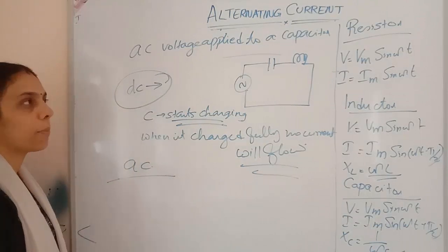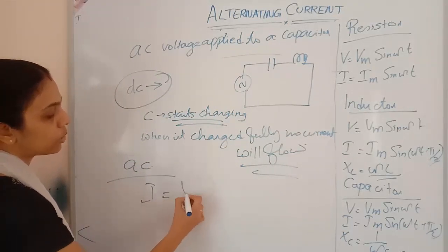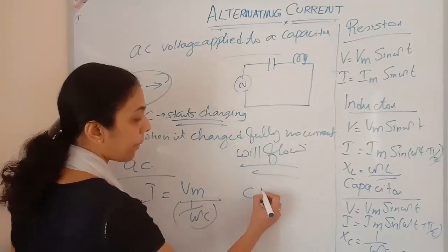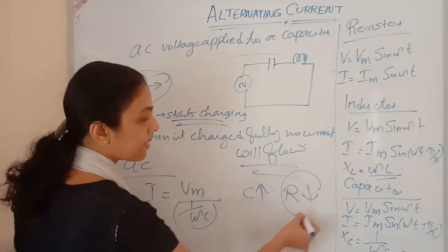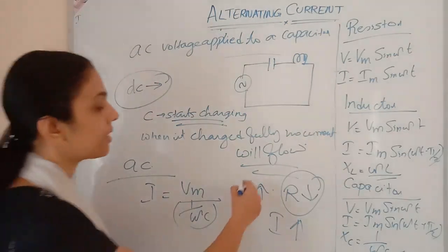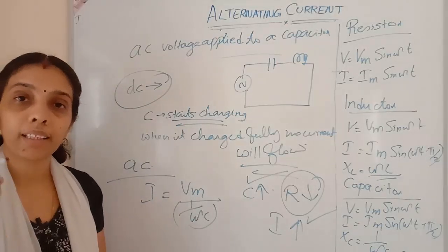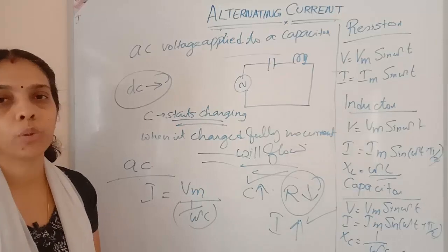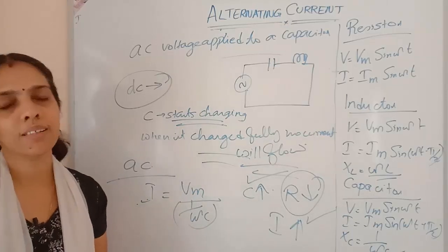For AC: Current equals Vm divided by 1/(ωC). As capacitance increases, resistance (reactance) decreases, so more current flows and the bulb glows brighter. If capacitance decreases, reactance increases and less current flows, so the bulb dims. So in AC, current flows freely through the capacitor, but in DC, current does not flow after the capacitor is fully charged.